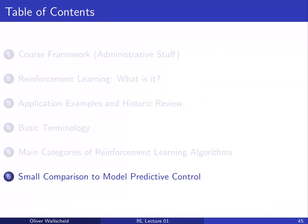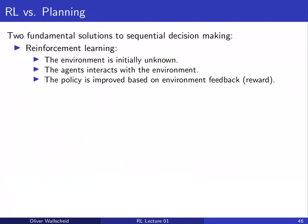The last topic is a comparison of reinforcement learning to model predictive control. This course has a focus on control problems, and in that domain MPC is also a classical solution candidate for optimal decision making. In this simplified comparison, both techniques are fundamental solutions to sequential decision making, but reinforcement learning has a strong emphasis on learning — starting with no information about the environment and learning about internal dynamics by interacting with it.